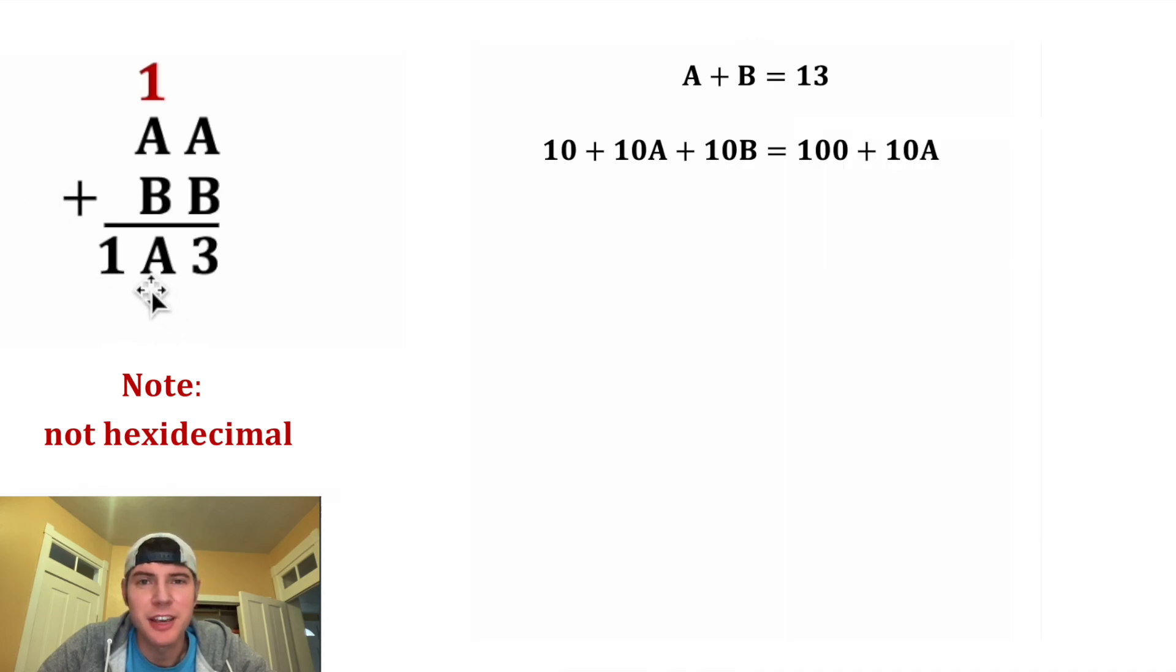Now we want to solve this system of equations. Let's subtract 10 from both sides and let's subtract 10A from both sides. On the left hand side, this stuff all cancels out so we just have 10B, and on the right hand side, this stuff all cancels out so we just have 90. After we divide both sides by 10, we get B is equal to 9.